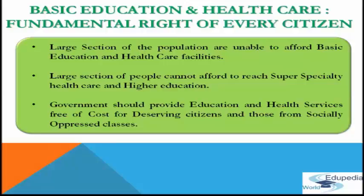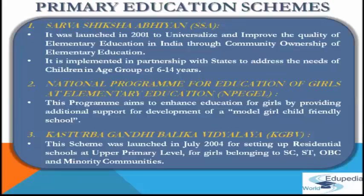Both the union and state governments have been raising expenditures in the education sector over the years in order to fulfill the objectives of attaining 100% literacy and health facilities for all. In order to achieve this dream of education for all, the government has initiated a number of schemes. Let us discuss three of these schemes.